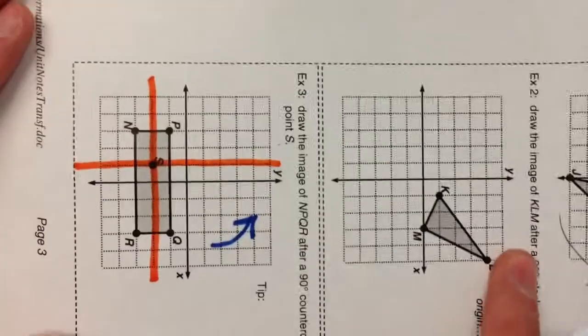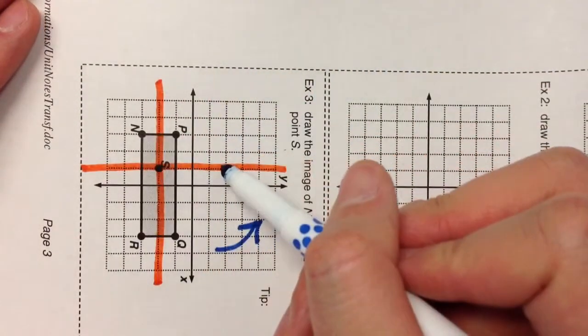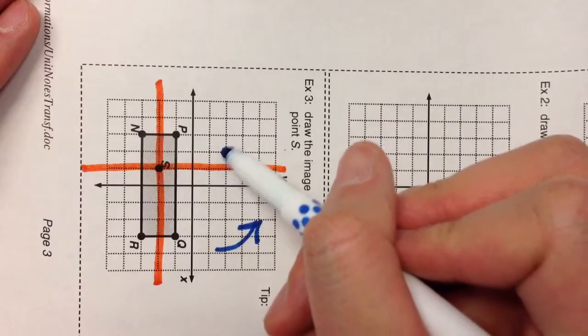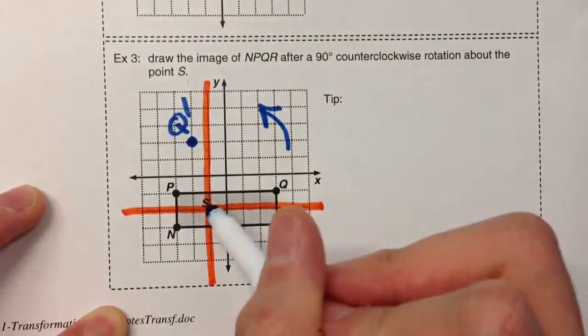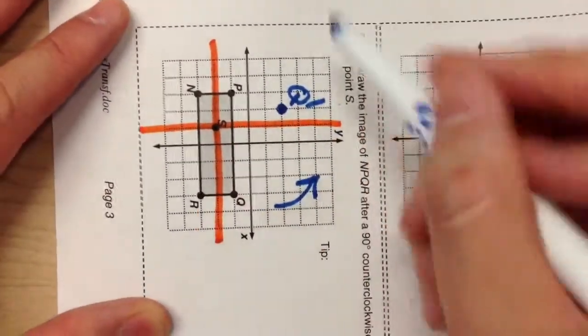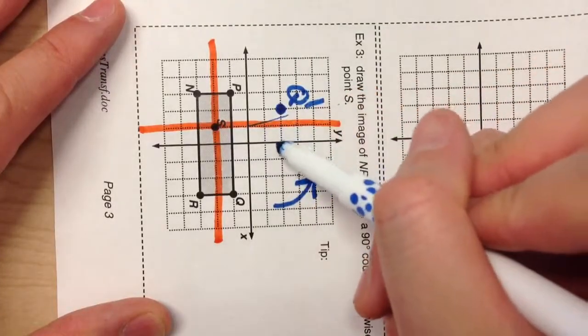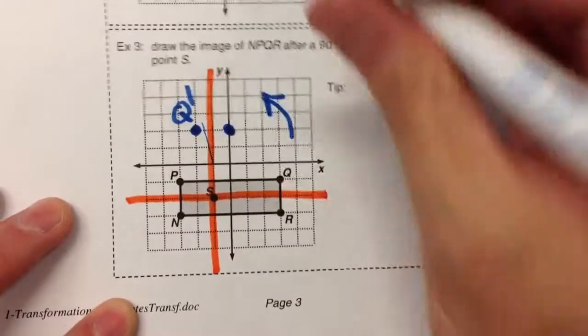Turn my paper. Four steps right, one step up. That's my new point Q. Same with R. Four right, one down. Turn my paper. Four right, one down.